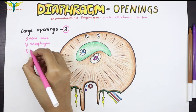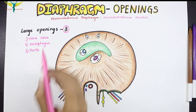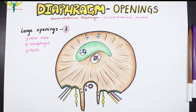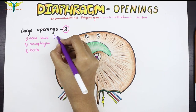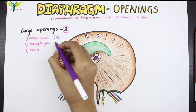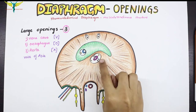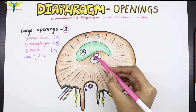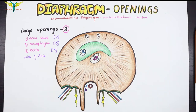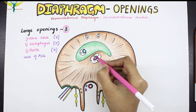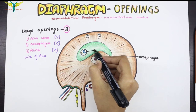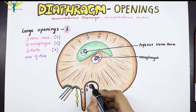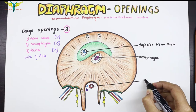The large openings can be remembered by the mnemonic VOA — I remember it as 'the Voice Of Asia.' In the diagram, this is the opening for the esophagus, this is the inferior vena cava opening, and this is the aortic opening with the aorta.